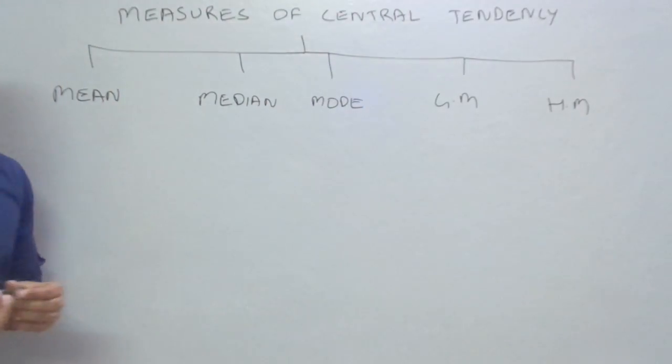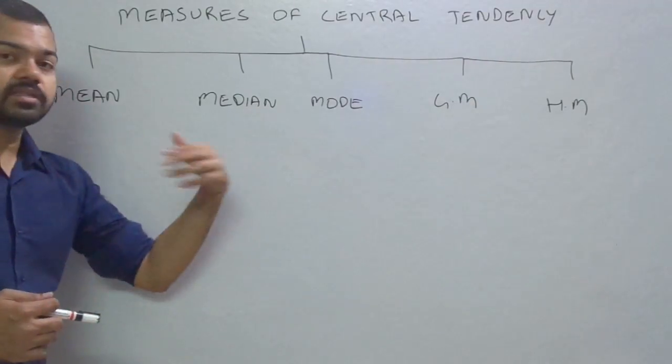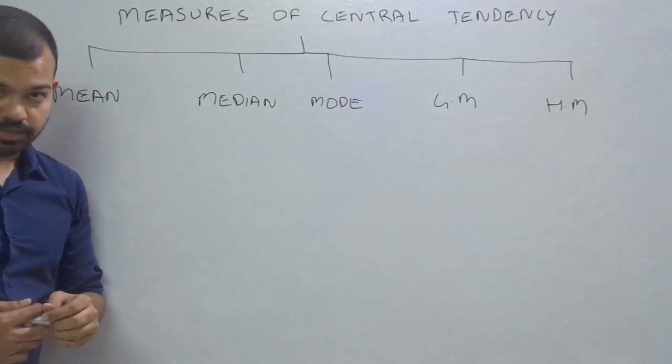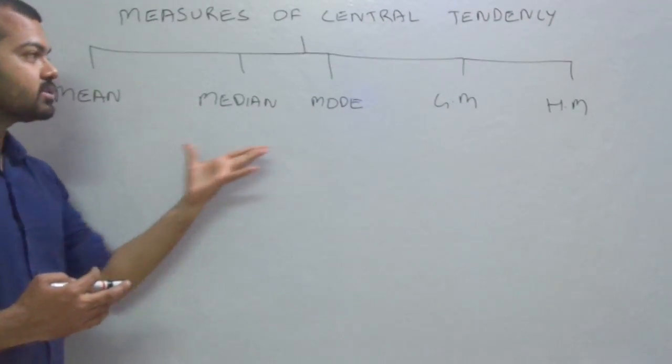These are the five methods to calculate average. We will look at them one by one in the upcoming videos: mean, median, mode, geometric mean, and harmonic mean. But I found that some students have problems drawing this flowchart.